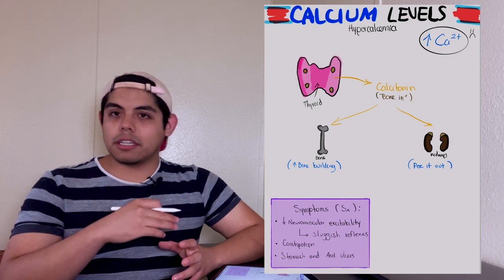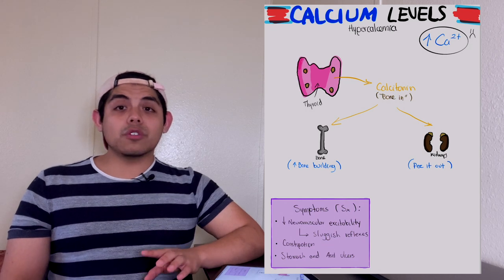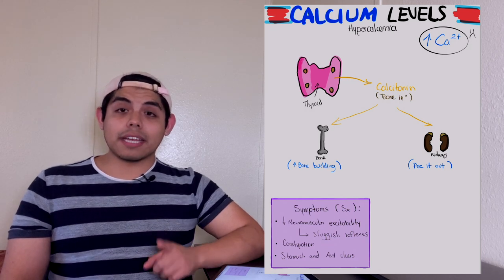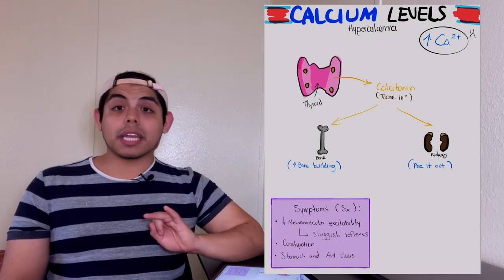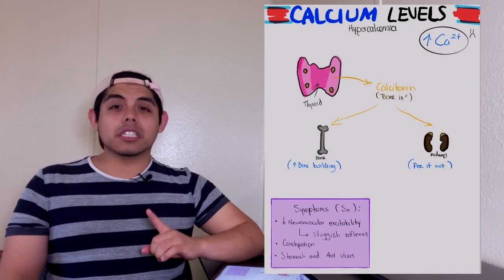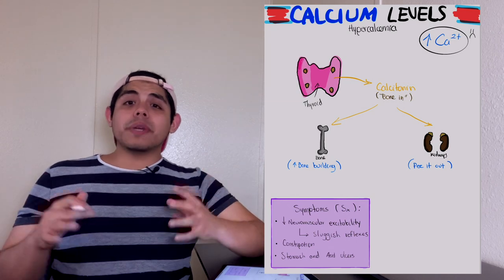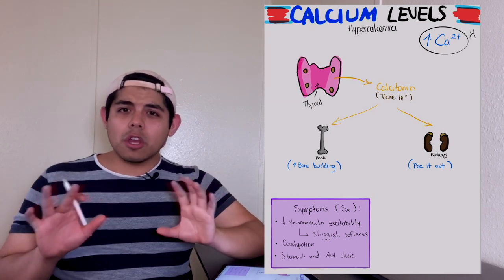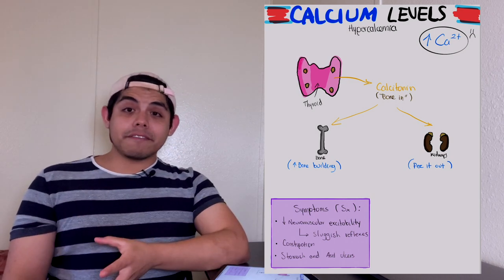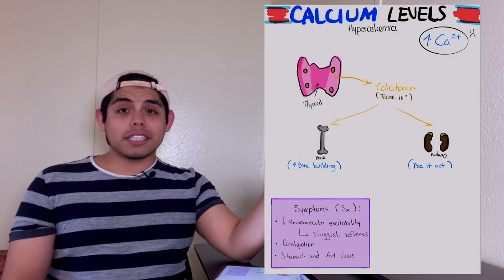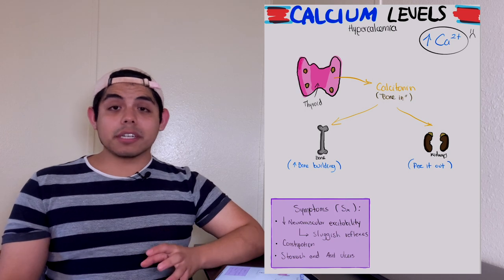Take the calcium from the blood, put it in the urine, and then just excrete it out. The main symptom of a person with hypercalcemia is going to be decreased neuromuscular excitability. This will cause constipation and stomach acid ulcers. This is going to happen because of the decreased neuromuscular excitability - that normal movement of the intestines, which is called peristalsis, will not be happening, and this will cause that constipation. This would also have an effect on the stomach and cause the acid ulcers. This is the way to identify if the patient has hypercalcemia.